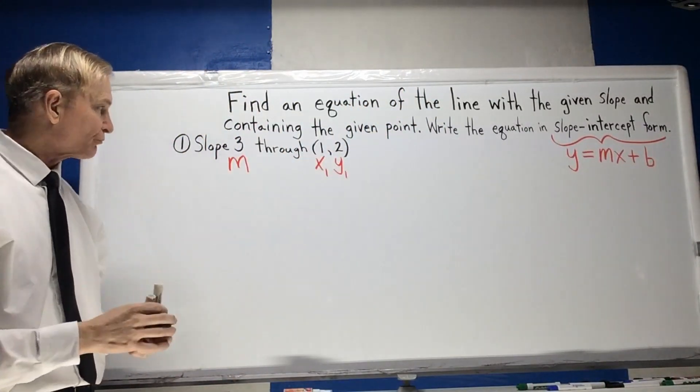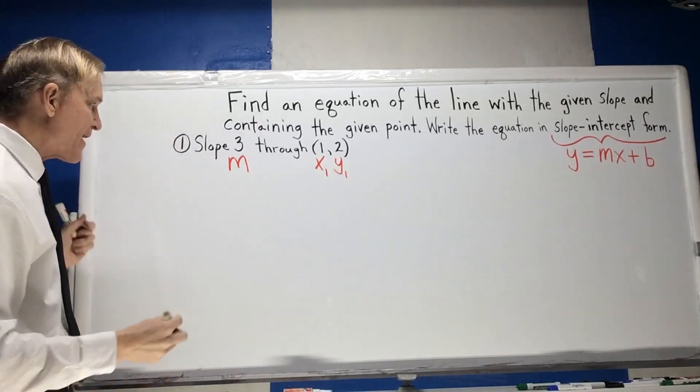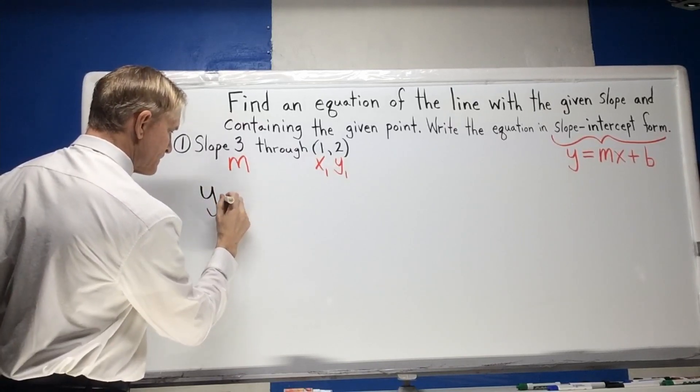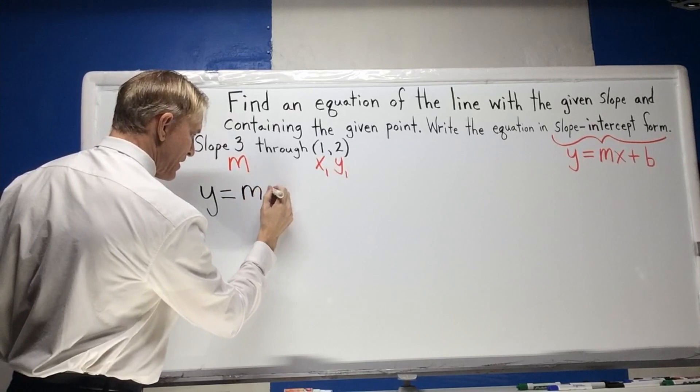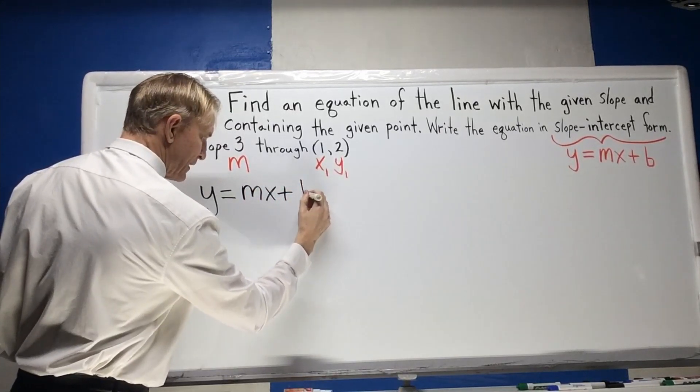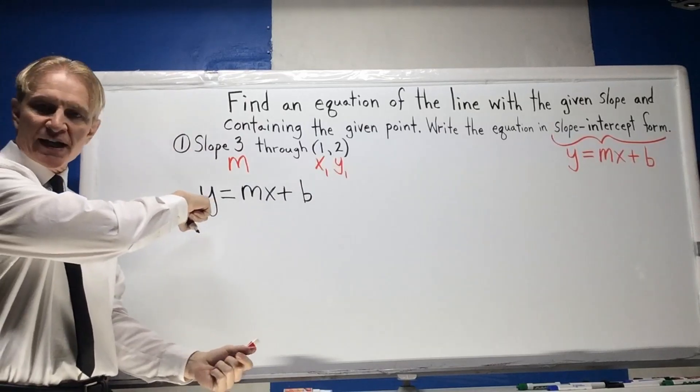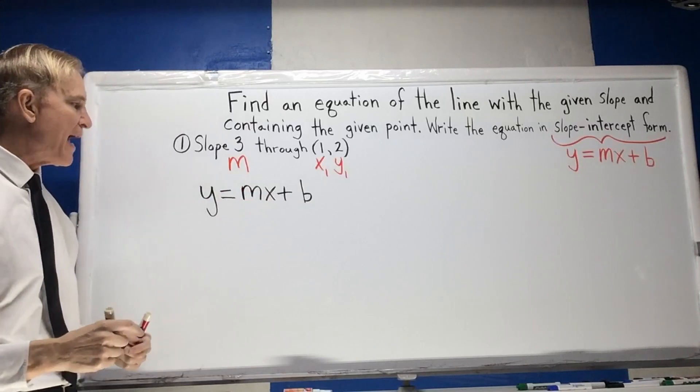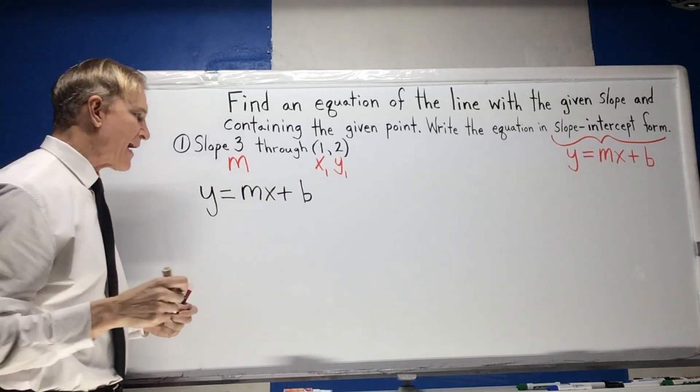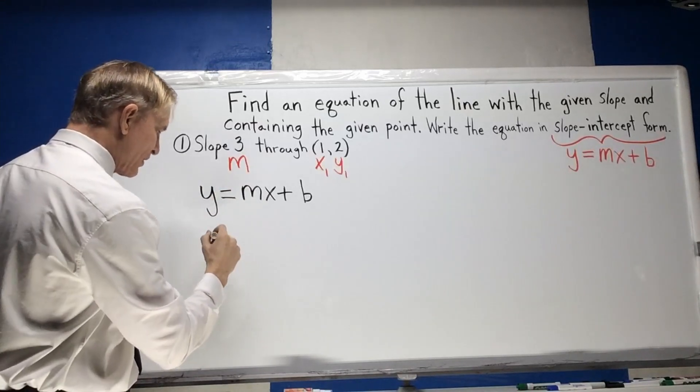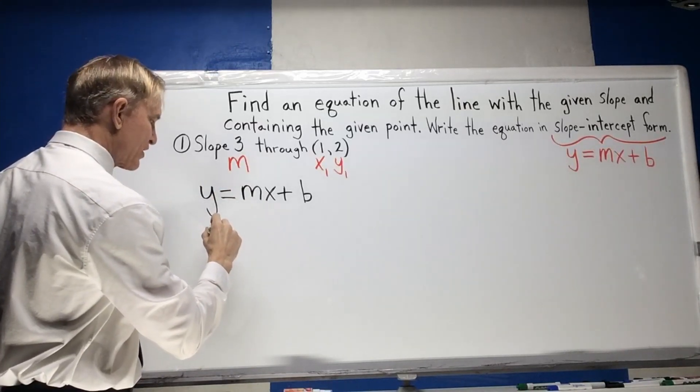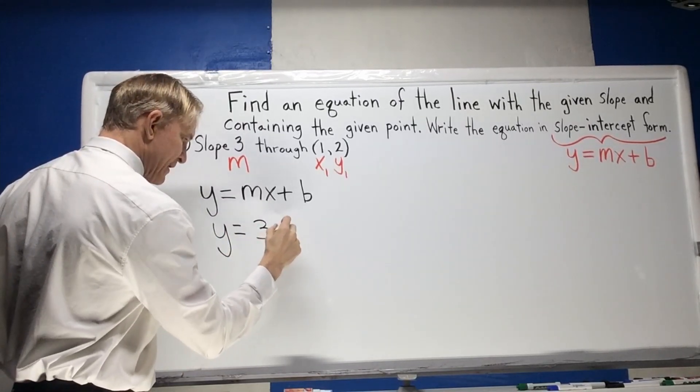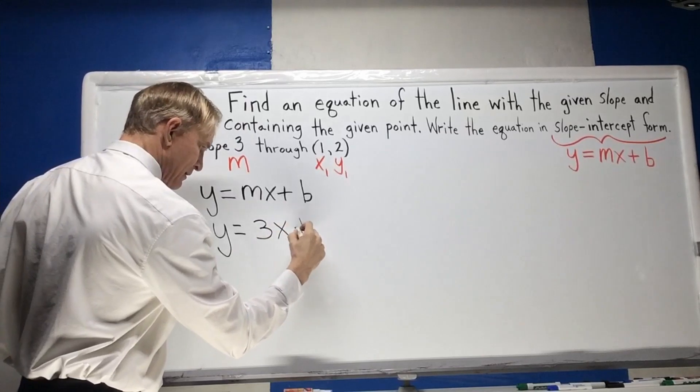All right, so now what I do is I come over here and I write y equals mx plus b. I know it's going to be in that format. y equals mx plus b. It's a nice format because it's in a function type format, f of x equals mx plus b. So y equals mx plus b, and now I go through this and I put in my slope. So I know it's going to look like this: y equals 3x plus b.